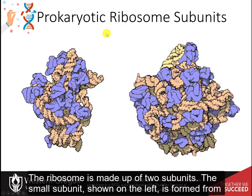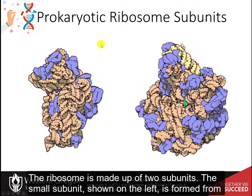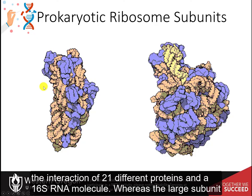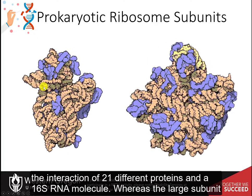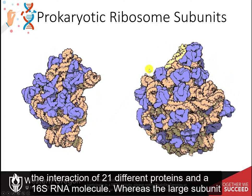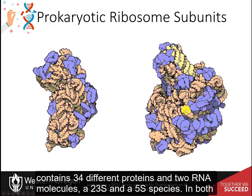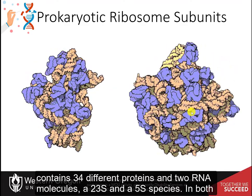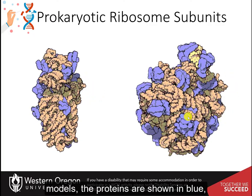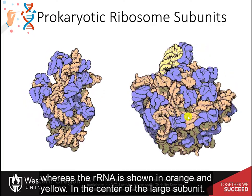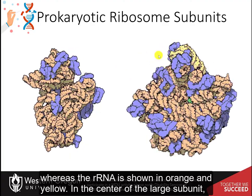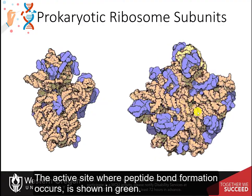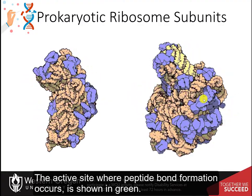The ribosome is made up of two subunits. The small subunit, shown on the left, is formed from the interaction of 21 different proteins and a 16S RNA molecule, whereas the large subunit contains 34 different proteins and two RNA molecules, a 23S and a 5S species. In both models, the proteins are shown in blue, whereas the rRNA is shown in orange and yellow. In the center of the large subunit, the active site where peptide bond formation occurs is shown in green.